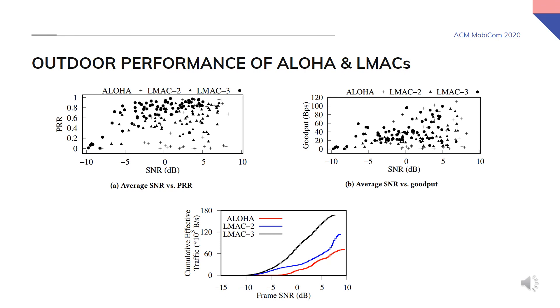Lastly, we share with you a few highlights from our outdoor evaluation. On top, each point in figures represent a node with the averaged SNR at the gateway. We can clearly see that most Aloha nodes are scattered near bottom while few of them enjoy higher PRR and goodput. This signifies low network fairness. However, in the case of LMACs, we can see that this problem has been significantly solved.